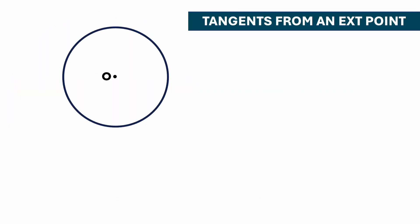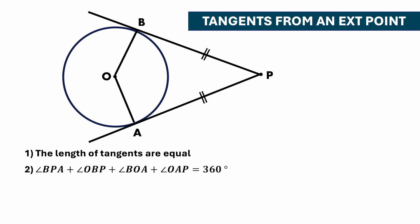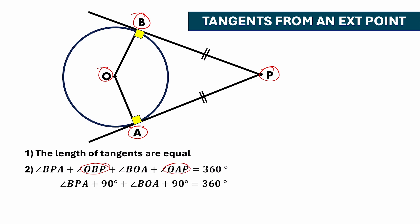There are a few more properties based on tangents from an external point. If P is an external point and you draw two tangents PA and PB, then the lengths of tangents are equal, so PA equals PB. Drawing the radii forms a quadrilateral where angle BPA plus angle OBP plus angle BOA plus angle OAP equals 360 degrees. Since angle OBP and angle OAP are each 90 degrees, substituting gives angle BPA plus angle BOA equals 180 degrees.